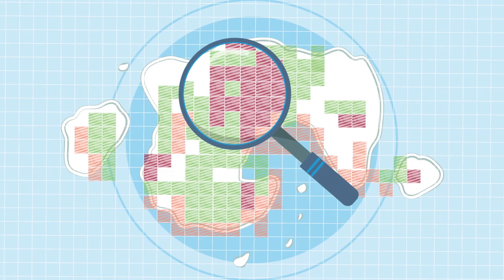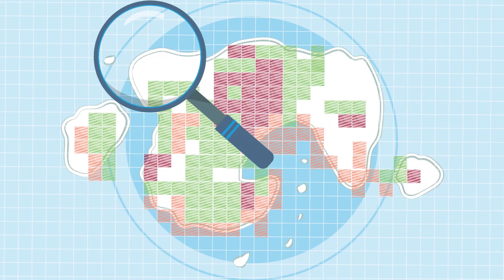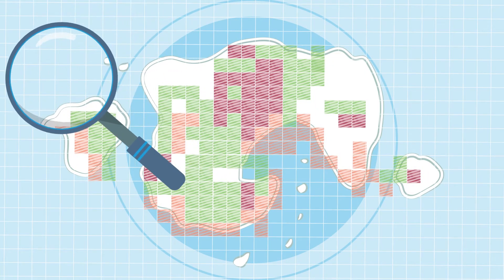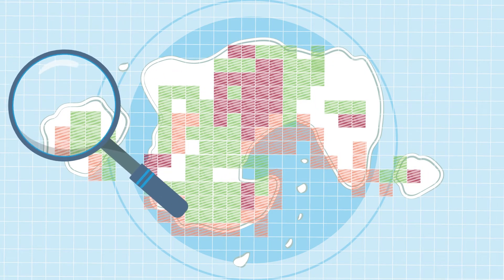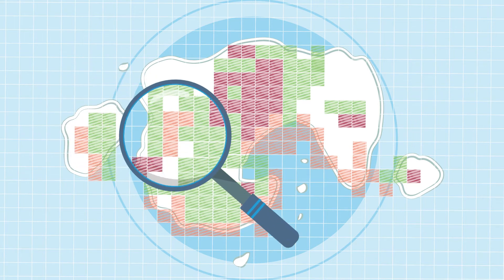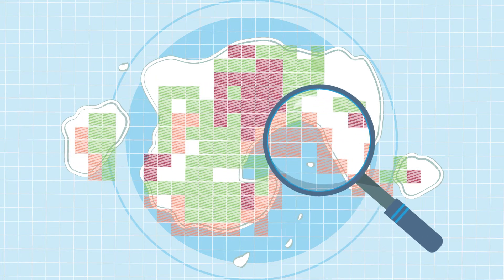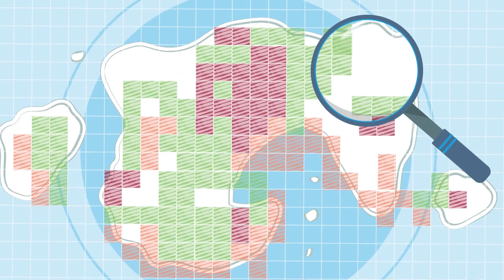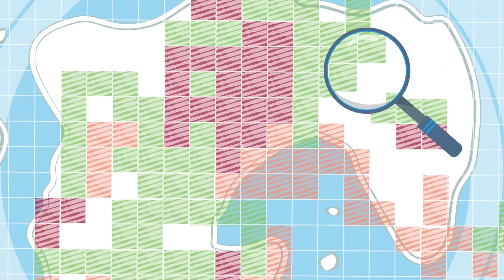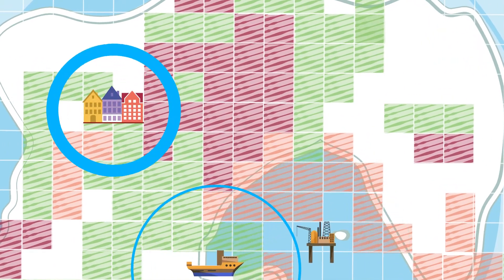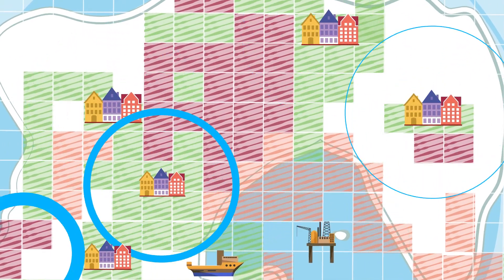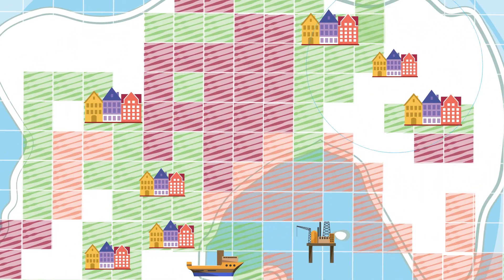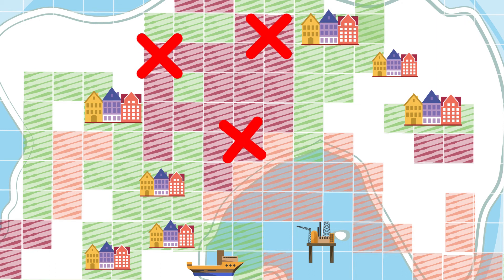Sensitivity mapping is a spatial tool that displays the relative sensitivity of these assets to a specific pressure within a land or seascape. These maps are then used by decision makers to plan and manage development to minimize environmental and social risk related to sensitive areas.